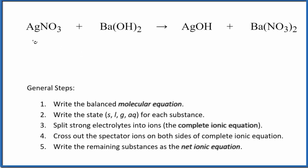Let's balance the net ionic equation for AgNO3 plus Ba(OH)2. This is silver nitrate and barium hydroxide. The first thing we need to do with net ionic equations is balance the molecular equation.